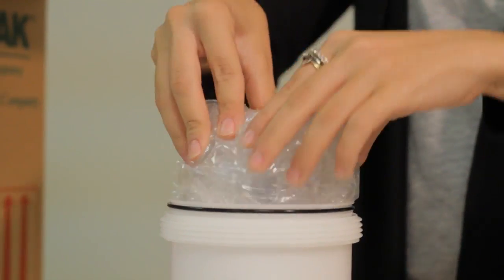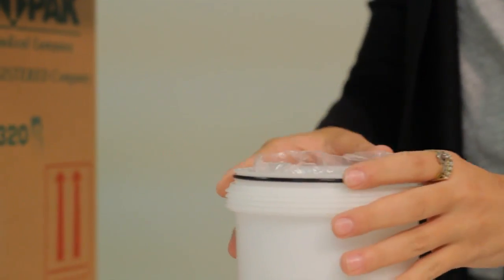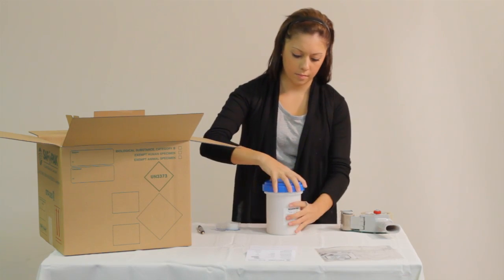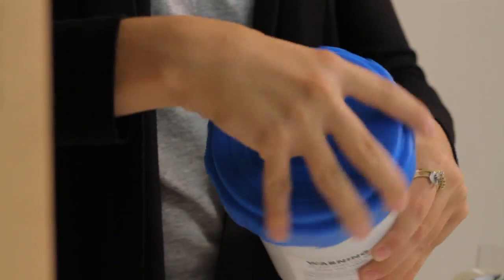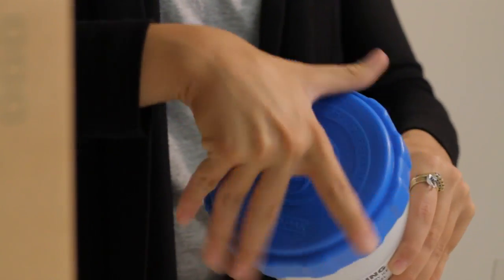If any of the primary containers exceeds 50 milliliters, the closure of the primary container must be oriented with the orientation arrows on the outer packaging.